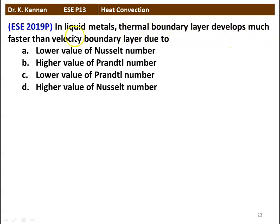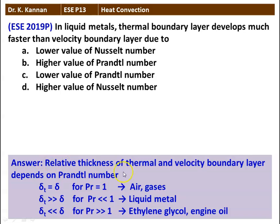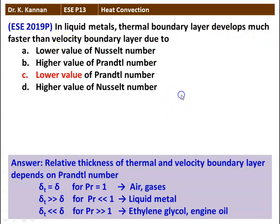In liquid metals, the thermal boundary layer develops much faster than the velocity boundary layer due to (A) lower value of Nusselt number, (B) higher value of Prandtl number, (C) lower value of Prandtl number, or (D) higher value of Nusselt number. The relative thickness of thermal and velocity boundary layers depends on the Prandtl number. For air and gases, Pr ≈ 1 and both layers are equal. For liquid metals, Pr is much less than 1, so the thermal boundary layer is much thicker than the velocity boundary layer. The answer is option C, lower value of Prandtl number.